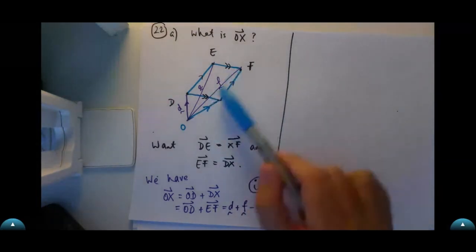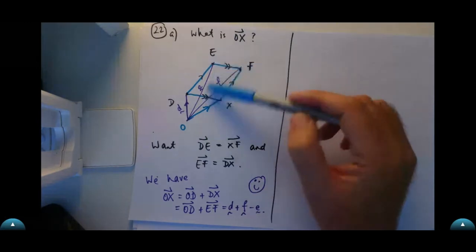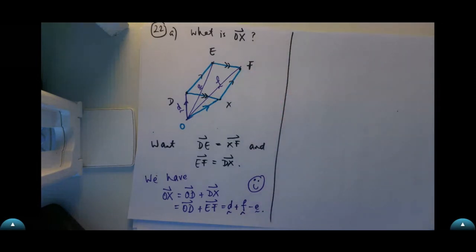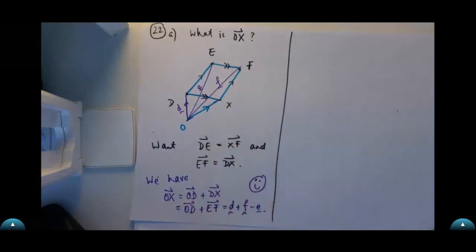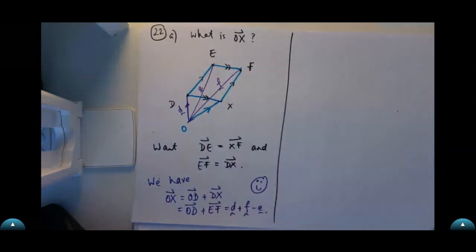This really wasn't a difficult exercise. Drawing a picture helped, then realising what the opposite sides of a parallelogram satisfy. Some people get confused because DX joins two different sets of points from EF, but they are the same vector — same length and same direction. That's what we mean when we say two vectors are equal.